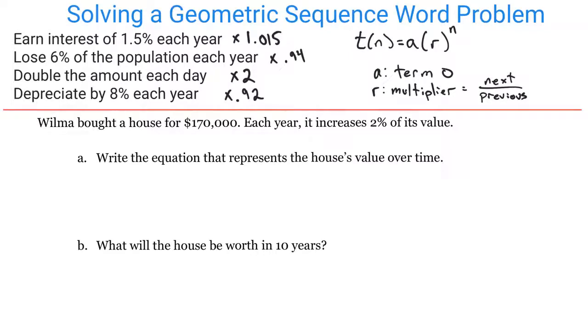Let's take a look at a quick example. Wilma bought a house for $170,000. Each year it increases 2% of its value, so it's going up by 2%. One way to think about this is with a table.